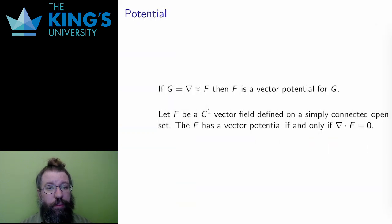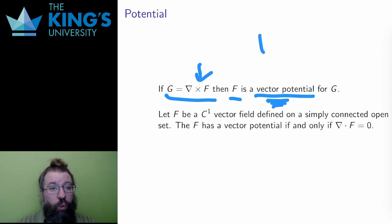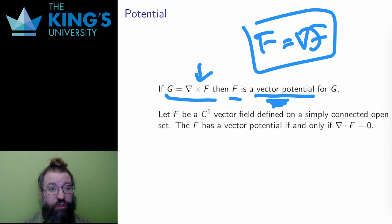There's some nice terminology that applies to cases like the previous example. If G is the curl of some other field F, then F is called a vector potential for G. This mirrors the previous definition of potential, which could also be called scalar potential in contrast. Scalar potential uses its gradient, and vector potential uses curl.